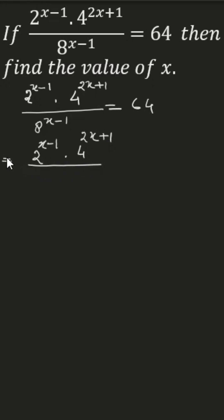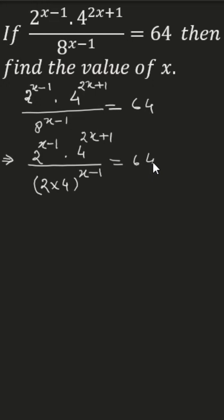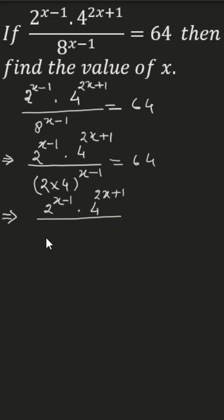We factorize 8 as 2 times 4, so the denominator becomes 2 to the power (x minus 1) times 4 to the power (x minus 1). This gives us 2 to the power (x minus 1) times 4 to the power (2x plus 1), all over 2 to the power (x minus 1) times 4 to the power (x minus 1), equal to 64.